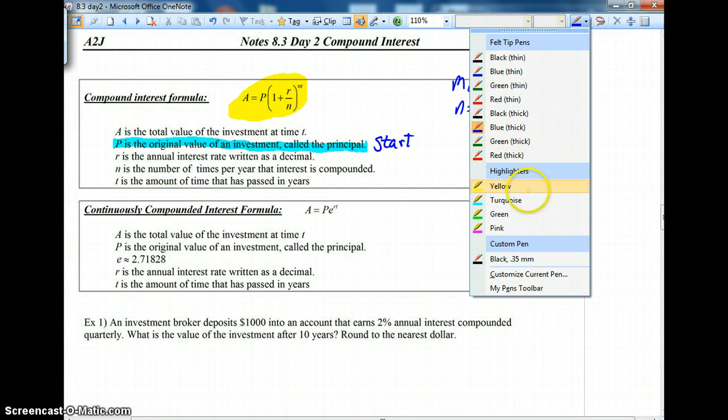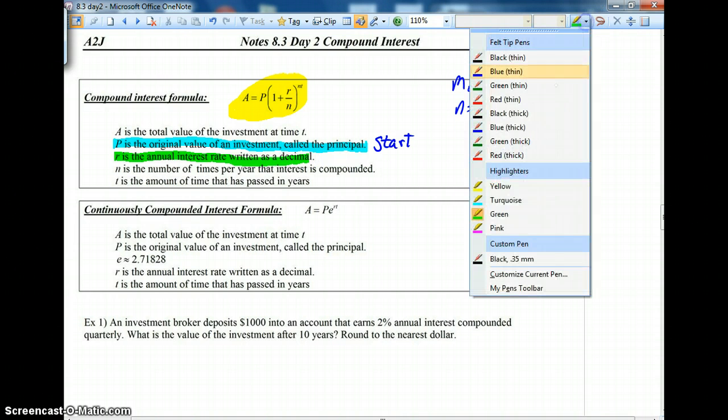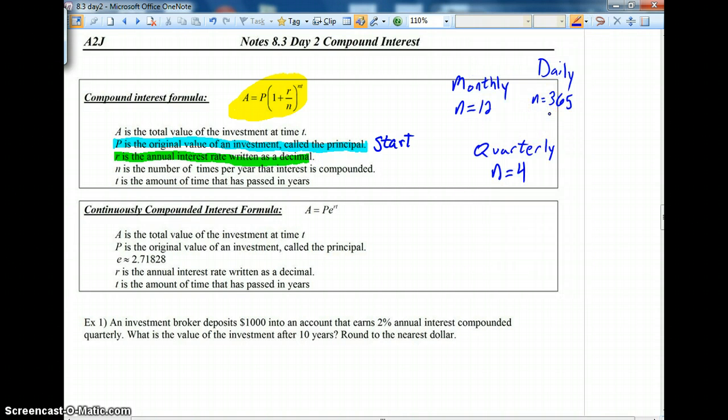r is going to be your annual interest rate. And just like what we saw on day one of 8.3, it must be written as a decimal. You can take your percent, divide by 100 if you'd like, or move your decimal place two steps to the left.